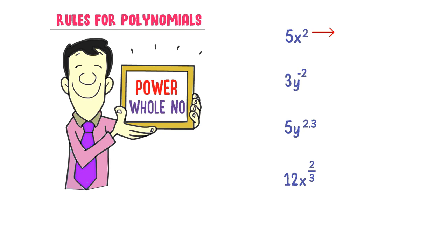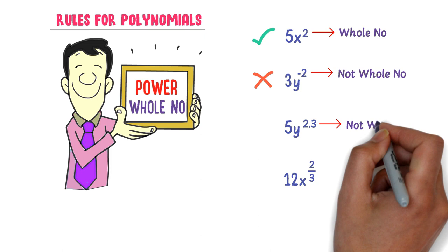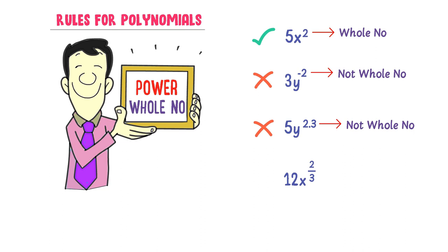In 5X squared, the power of X is 2, which belongs to the whole numbers — so it is a polynomial. The power 2.3 and the power 2 upon 3 do not belong to whole numbers, so those are not polynomials. Hence, only 5X squared is a polynomial; the rest are not polynomials because their powers do not belong to whole numbers.